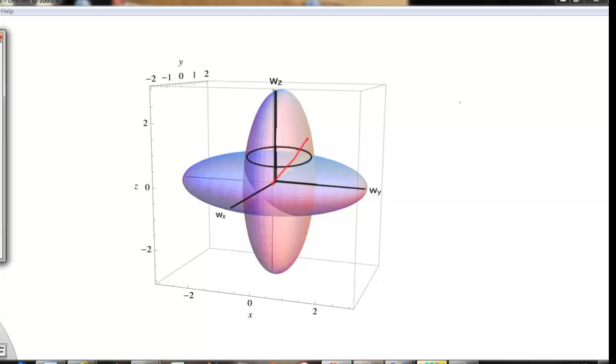We have the intersection of the ellipsoids, and as the body rotates, the omega vector will point to that intersection of ellipsoids.